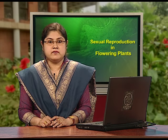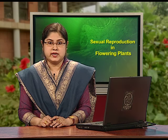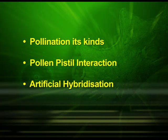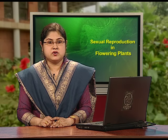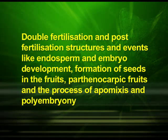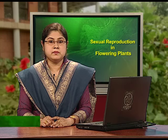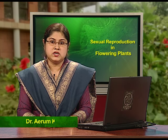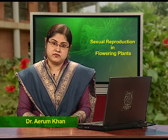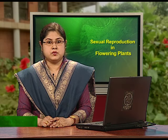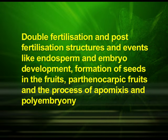The third part will give the detailed account of pollination, its kinds, pollen-pistil interaction and artificial hybridization. The fourth part will comprise of double fertilization and post-fertilization structures and events like endosperm and embryo development, formation of seeds in the fruits, parthenocarpic fruits and the process of apomixis and polyembryony.